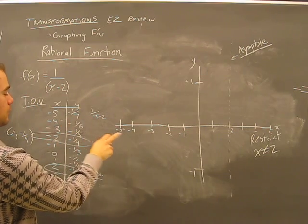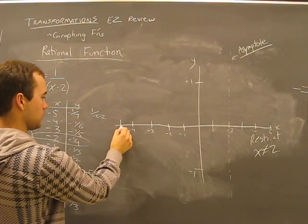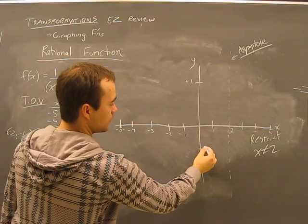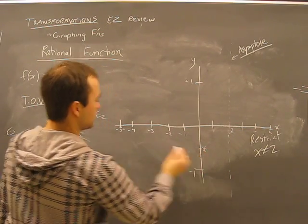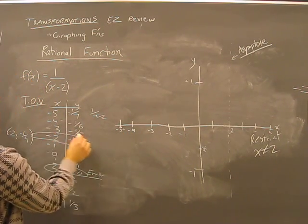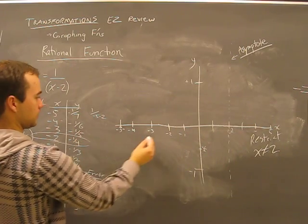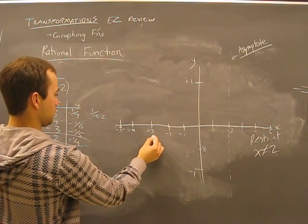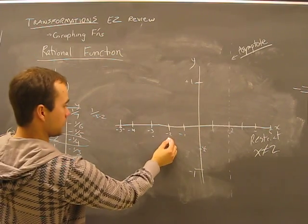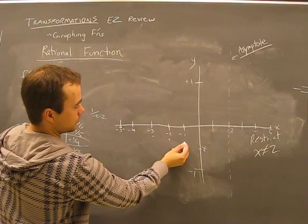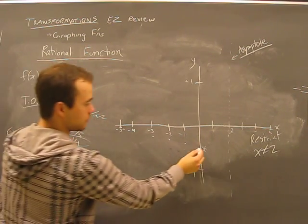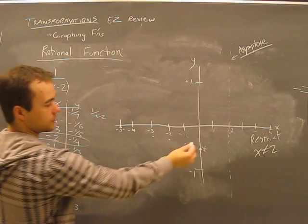OK, minus five and one-seventh, negative one-seventh, so that's, if 0.5, negative 0.5 is there, negative half is right there. So minus one-seventh, minus four and one-sixth, that's a little bigger than one-seventh. Minus three and one-fifth, minus two and a quarter, minus one and one-third.